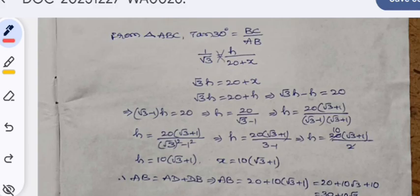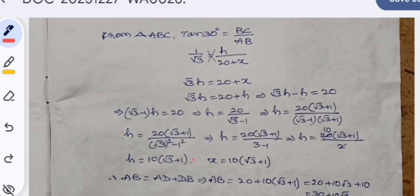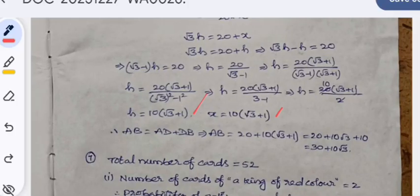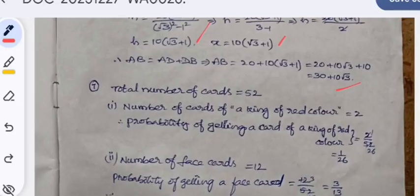The answer obtained is h = 10(√3 + 1). As x is also equal to h, the same answer we obtain. AB = 30 + 10√3.